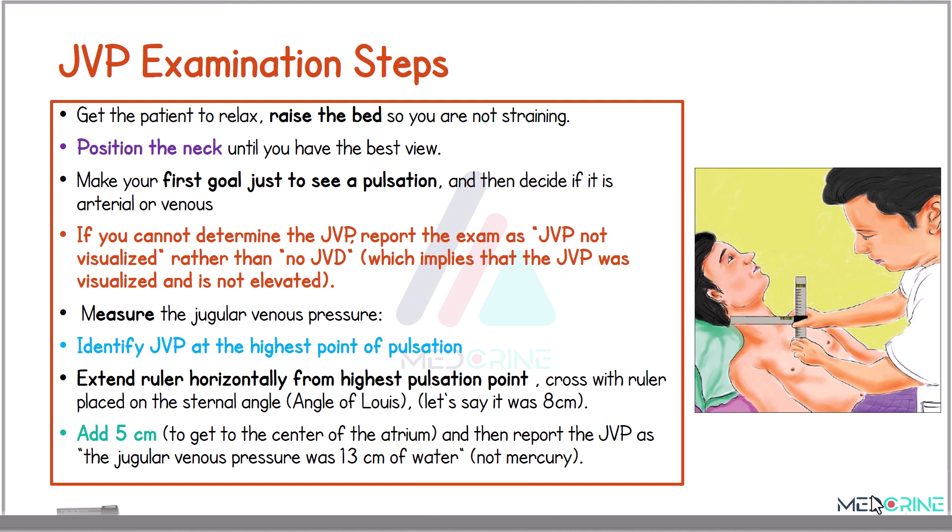If you cannot determine the jugular venous pressure, report that the exam is 'JVP not visualized,' rather than reporting that there is no JVP — which implies that JVP was not visualized and is not elevated.